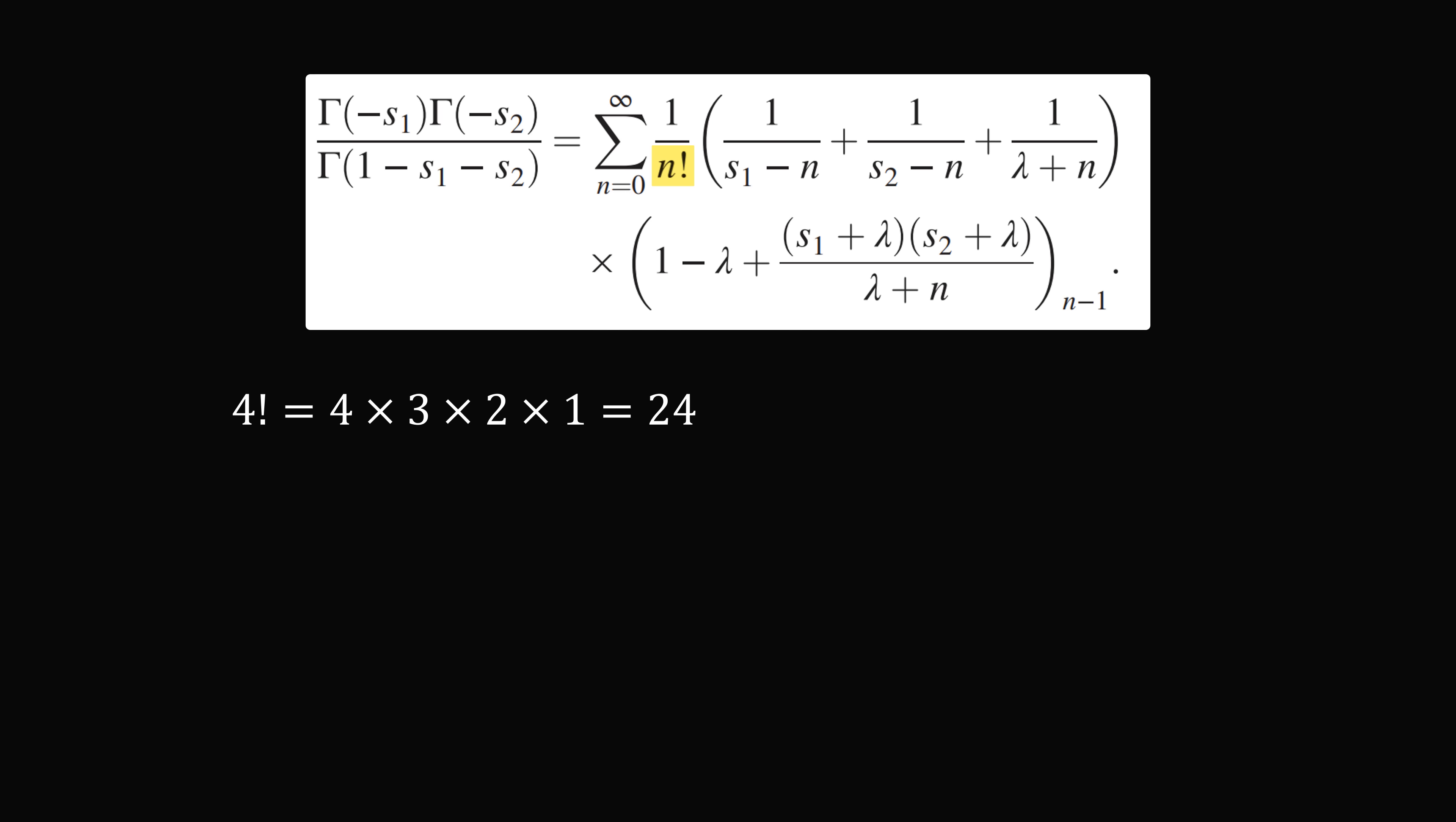4 factorial is equal to 4 times 3 times 2 times 1, which equals 24. 7 factorial will be 7 times 6 times 5 times 4 times 3 times 2 times 1, which equals 5040.